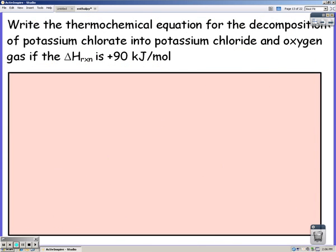Looking at this one we're just writing the thermochemical equation for the decomposition of potassium chlorate into potassium chloride and oxygen. So the first thing you need to do is write a balanced equation. We're starting with potassium chlorate and it tells us what it decomposes into potassium chloride and oxygen. We need to have it balanced.